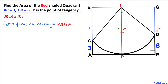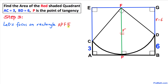Focusing on rectangle PBGF again: the whole length GB is radius r, and length BD is 6, so length GD is going to be r minus 6. Likewise, focusing on rectangle APFE: the whole length EA is radius r, and length AC is 3, so distance EC is going to be r minus 3.